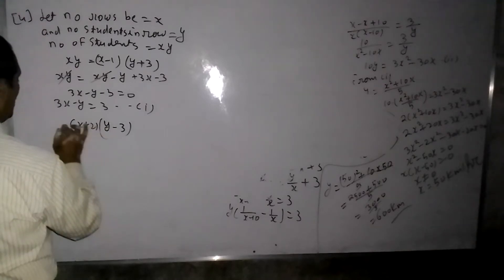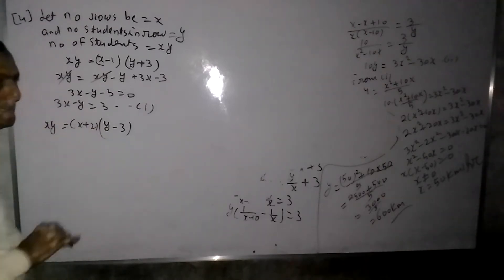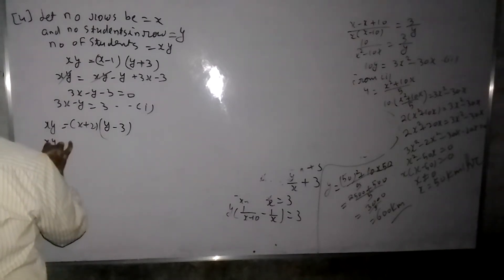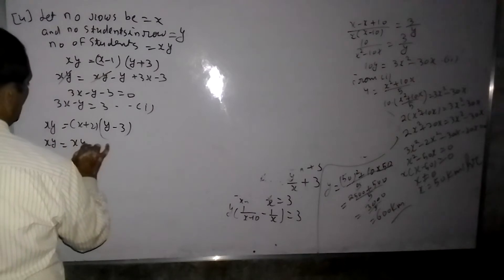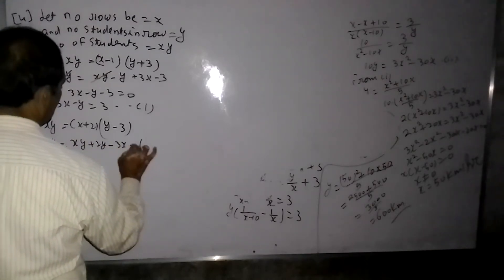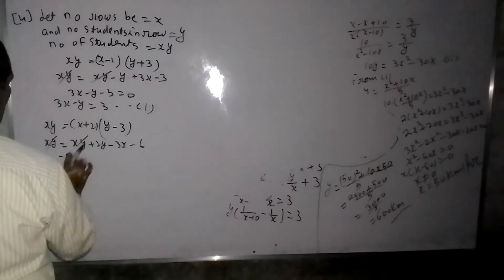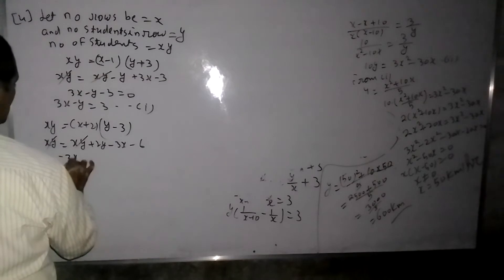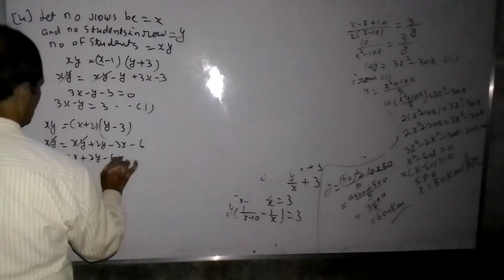Okay, let's set up the equations. From the first condition: X minus 1 into Y plus 3 equals XY. Expanding and simplifying: minus 3X plus 2Y minus 6 equals 0, which gives us 3X minus 2Y minus 6.